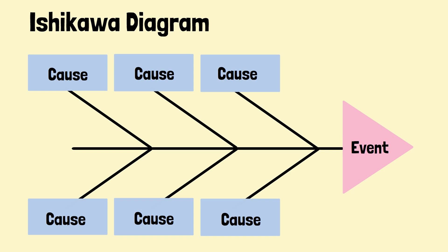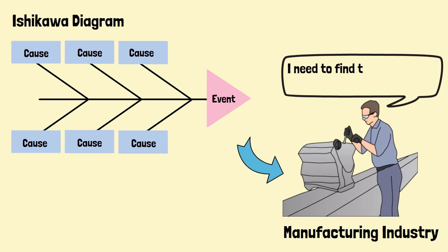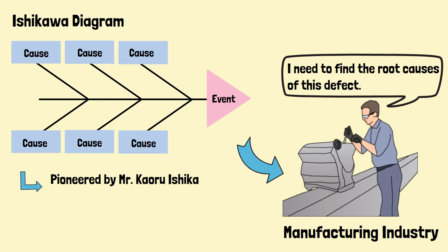An Ishikawa Diagram is a diagram that displays the probable causes that contribute to an event. It is primarily deployed in the manufacturing industry to perform root cause analysis of quality issues or defects. The diagram is named after Mr. Keiru Ishikawa, who pioneered the quality management process in the 1960s.